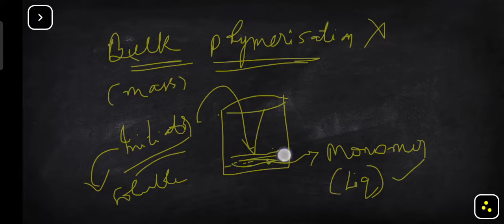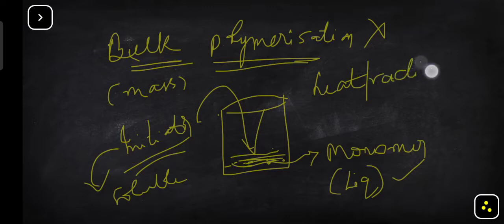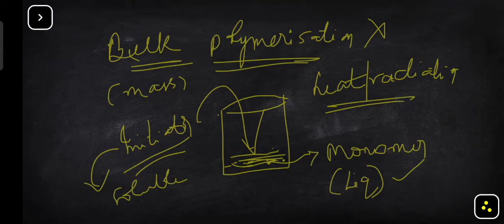After adding the initiator, you need to initiate the reaction. You pass radiation or apply heat so that the initiator gets activated — it will dissociate to give free radicals. Once the free radical is generated, it can attack the monomer. Then you will also have a stirrer and you need to keep stirring the reaction mixture.